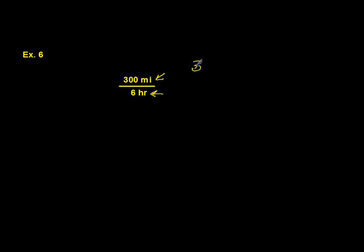So in this example, you have 300 miles on the top, and you have 6 hours on the bottom. So essentially this is saying in 6 hours you travel 300 miles. And we can't cancel here because the units are different.